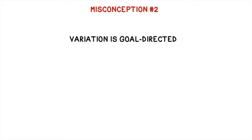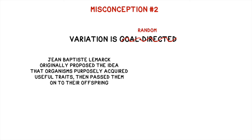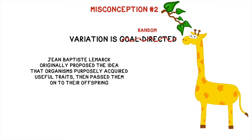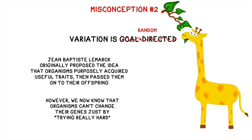Now we reach misconception number two: variation is not goal-directed, variation is random. Organisms can't choose which genetic variations they would like to have. Before Darwin, a scientist named Jean-Baptiste Lamarck suggested that organisms purposely acquired traits over time, which they then passed on. Following this line of thought, a giraffe would spend years and years stretching its neck to reach higher food, would somehow magically develop a longer neck, and then would have offspring with longer necks too. We now know that this is not correct.